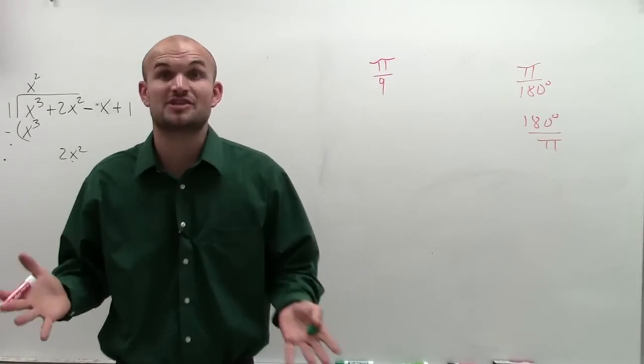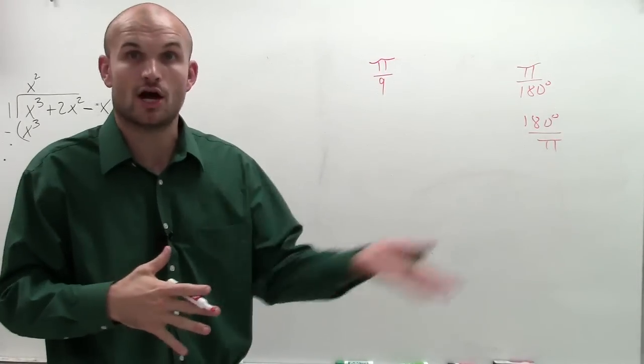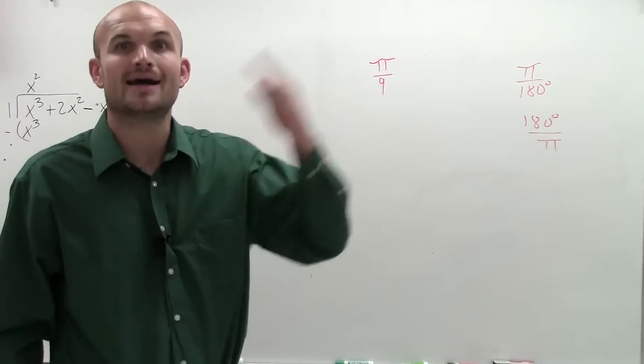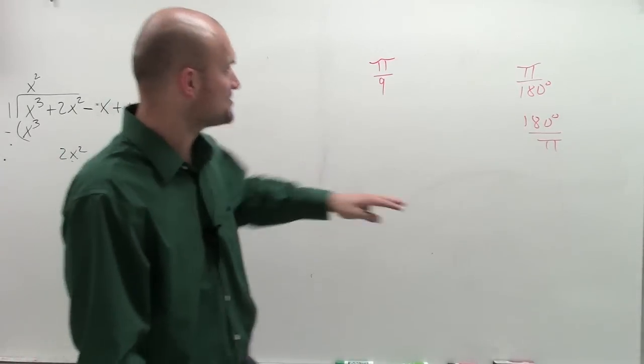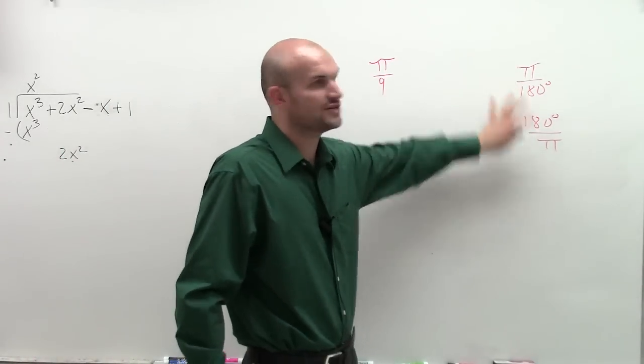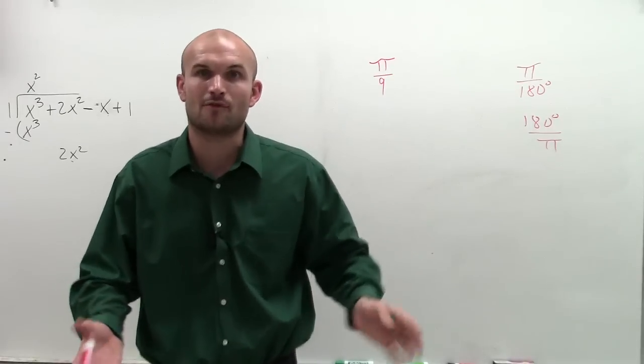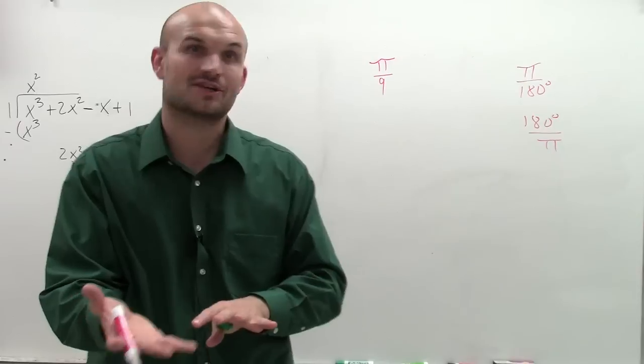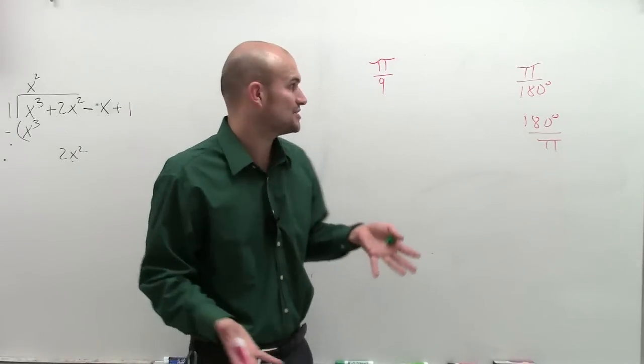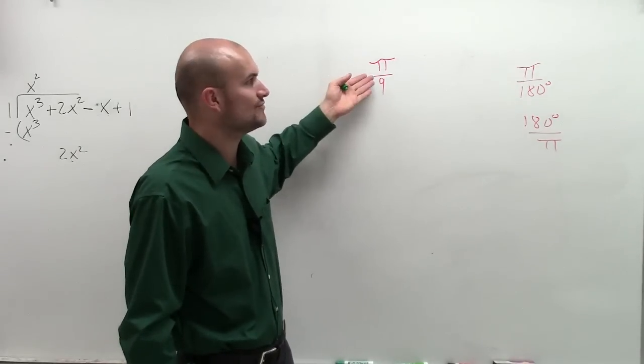Now when dealing with measurements, those are equivalent to each other, right? 180 degrees, straight angle. π, halfway around the circle, both also a straight angle. So these measurements or this ratio are equivalent to each other, but they're in different formats. One's in radians and one's in degrees. So we're going to use this ratio to help us convert something that's in radians to degrees.